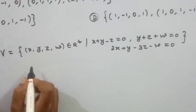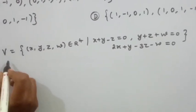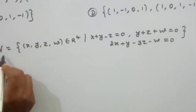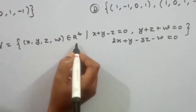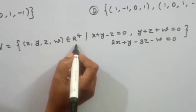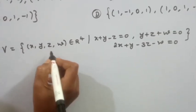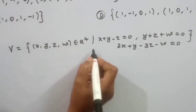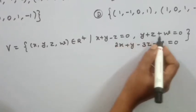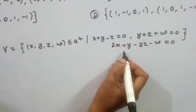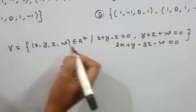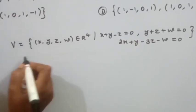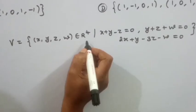The vector space V consists of all elements in R4 satisfying the three given conditions, making V a subspace of R4. We need to find a basis for this subspace.